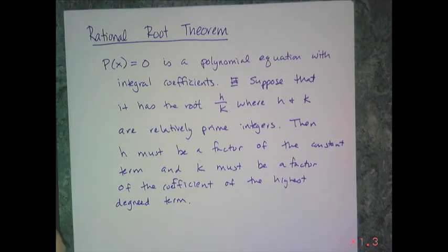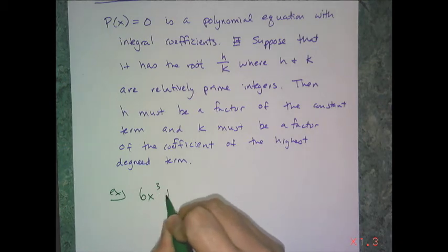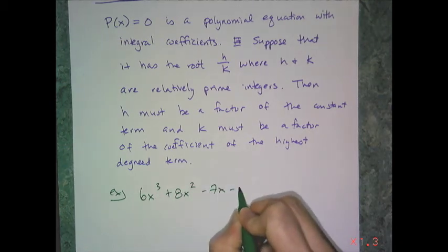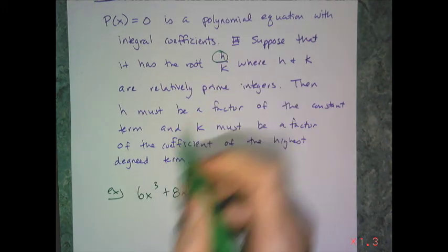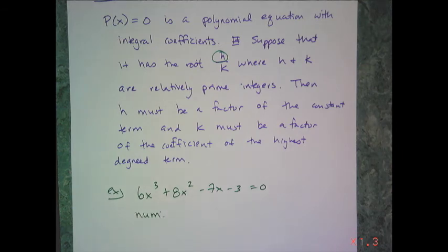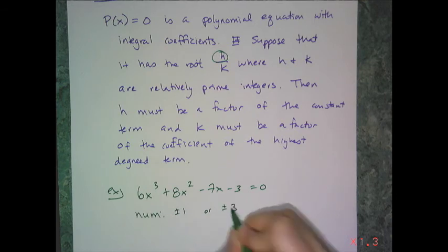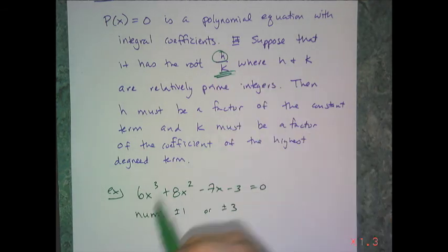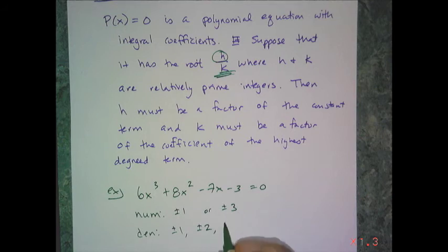This gives me a potential list of rational roots to try to synthetically divide out. For example, given 6x³ + 8x² - 7x - 3 = 0: I take the constant term — that's the h, the numerator — and look at all possible factors of 3: plus or minus 1 or plus or minus 3. Then the denominators come from the leading coefficient 6, so k can be plus or minus 1, 2, 3, or 6.